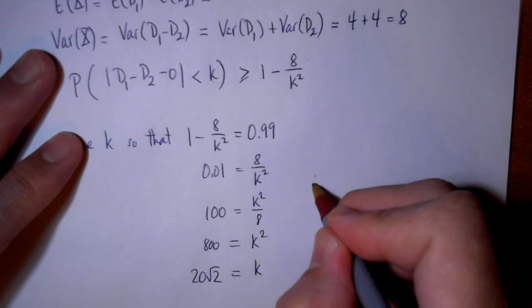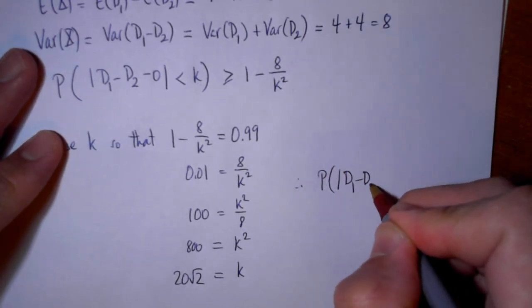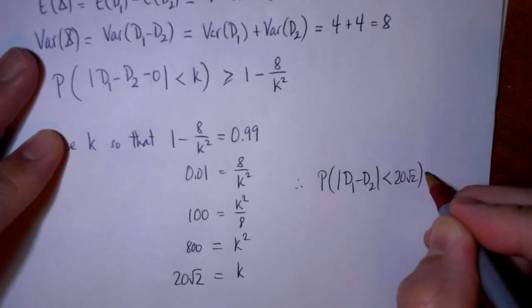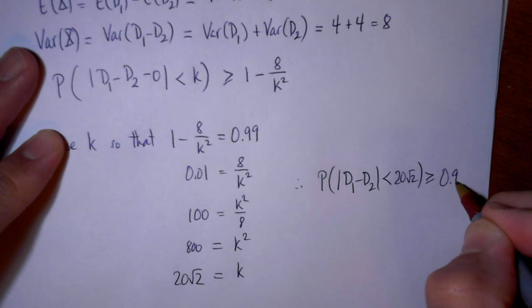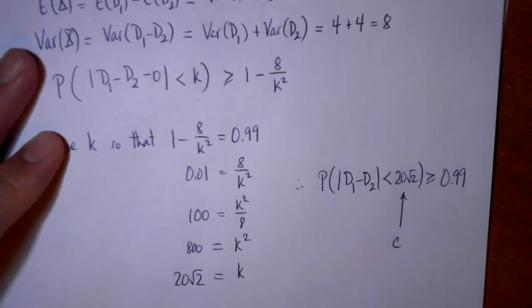And so our conclusion is that the probability that the absolute value of D1 minus D2 is less than 20 square root of 2 has to be greater than or equal to 0.99. And so the value of c for this problem will be this number right here.